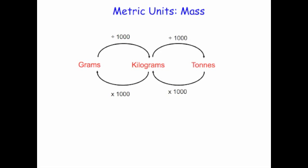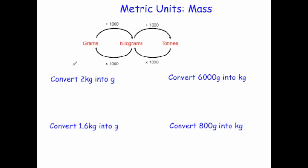Let's have a look at some typical questions. Convert two kilograms into grams. To go from kilograms to grams, you times by a thousand. So you do two times one thousand, which is equal to two thousand grams.